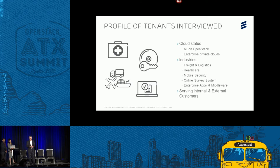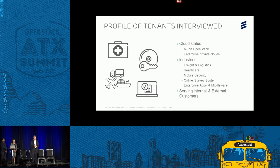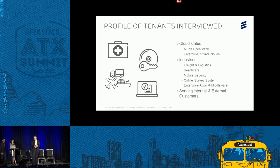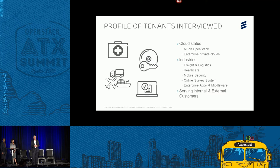One last thing to mention: all of these tenants were and are on OpenStack clouds — some going back to Grizzly, some on Icehouse — so they're moving forward on current cloud releases. They represented a number of industries: freight and logistics, healthcare, mobile security, online survey systems for webinars, and a variety of enterprise apps and middleware. Some were serving internal enterprise needs, but a good number were actually delivering services directly to end customers outside the enterprise.